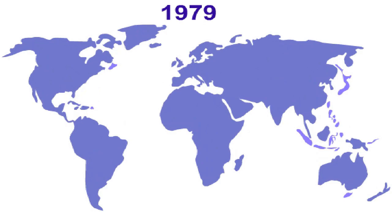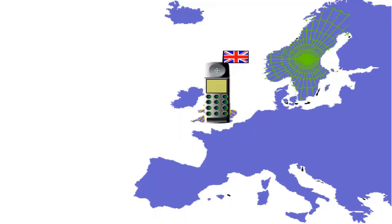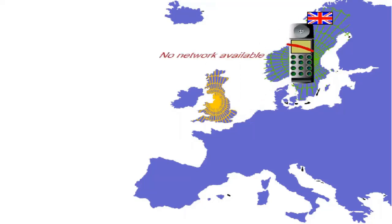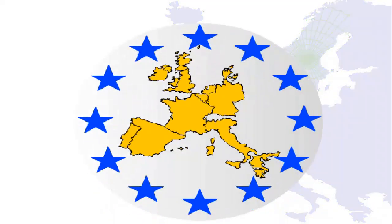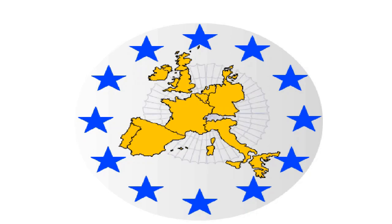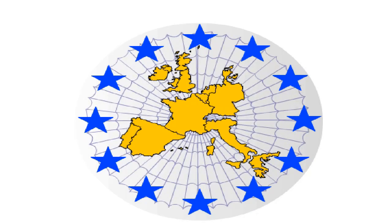By 1979, several mobile radio networks already existed worldwide. They operated on different frequency bands and were based on different standards. A mobile phone user in Britain could not use his mobile phone in Sweden because the British and Swedish mobile radio networks were each based on their own standards with different signaling protocols and were incompatible with each other. In view of the European unification process, it became clear that mobile telephony had to overcome national borders. A new European standard was due.